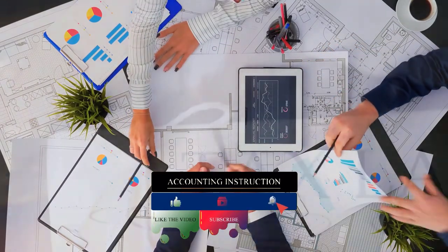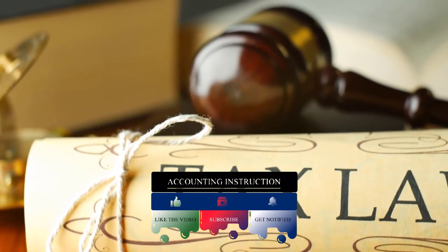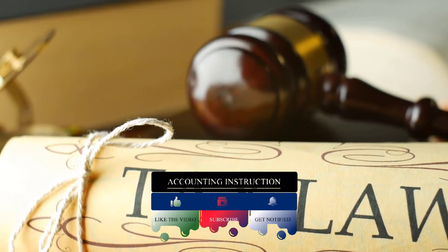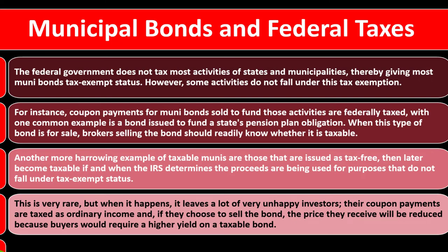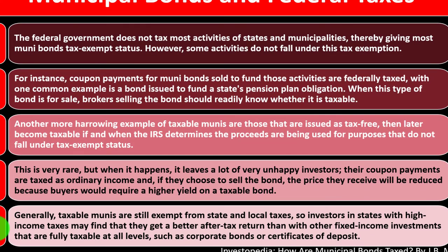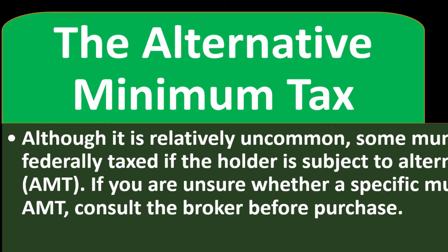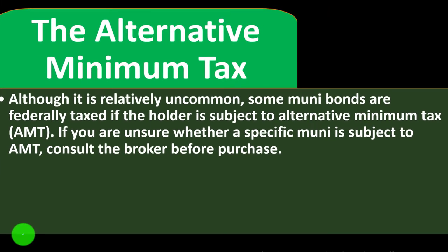A more serious example of taxable munis are those issued as tax-free that later become taxable if the IRS determines the proceeds are being used for purchases that do not fall under tax-exempt status. This is very rare, but when it happens it leaves many unhappy investors — their coupon payments are taxed as ordinary income, and if they sell the bond the price will be reduced because buyers require a higher yield on taxable bonds. Generally, taxable munis are still exempt from state and local taxes, so investors in high-income-tax states may still find a better after-tax return than with fully taxable investments like corporate bonds or CDs.